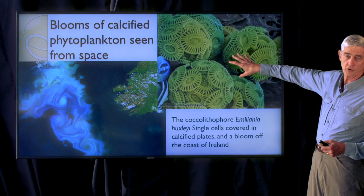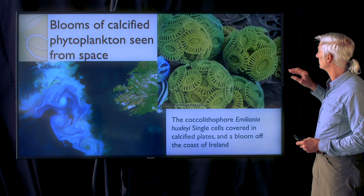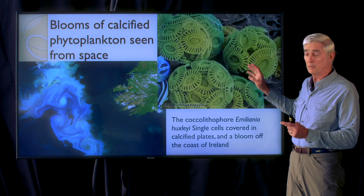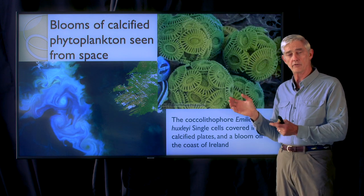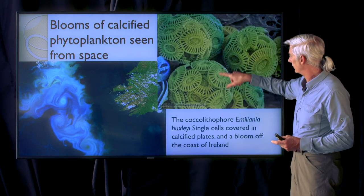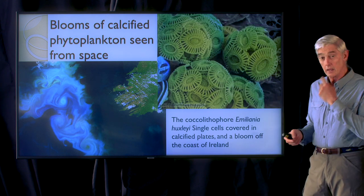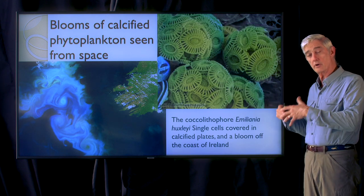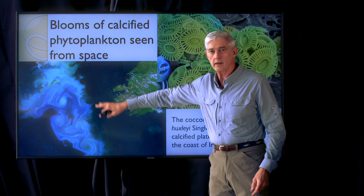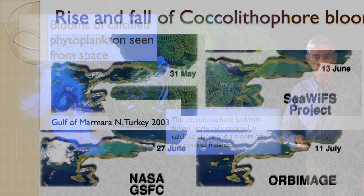This is a picture of the coccolithophore Emiliania. This coccolithophore coats itself in calcareous plates — those disc-like, almost flying-saucer-looking plates. And because they're calcareous, they look sort of chalky, and you can see that in these images from space.